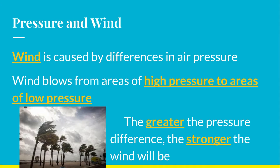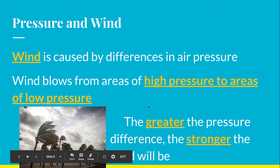So let's talk about wind and pressure. Wind is caused by differences in air pressure — that is all it is. Wind is going to blow from areas of high pressure, where the air molecules are really tight together, to areas of low pressure. They're going to try to equal themselves out. The greater the pressure difference, the stronger the wind will be.